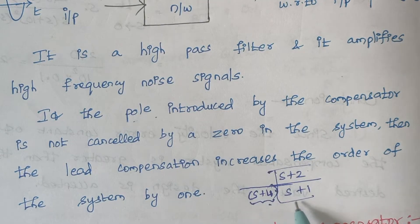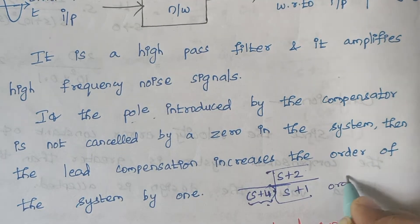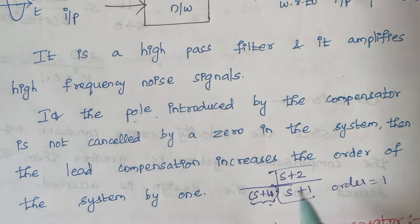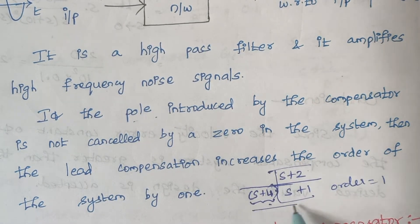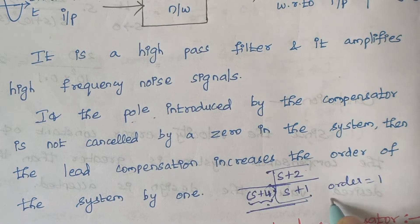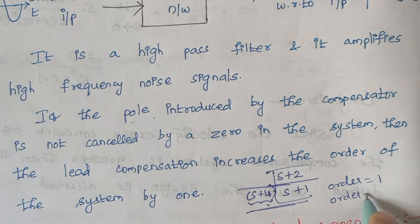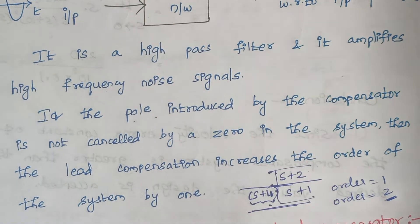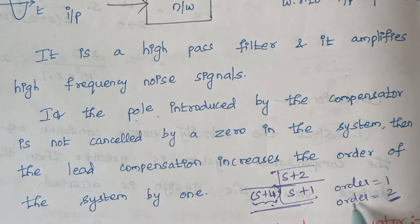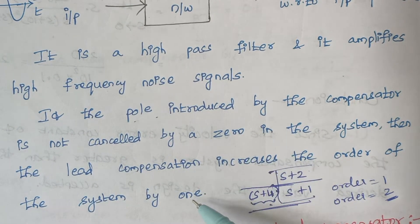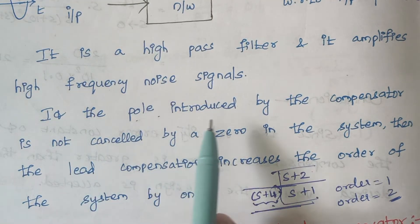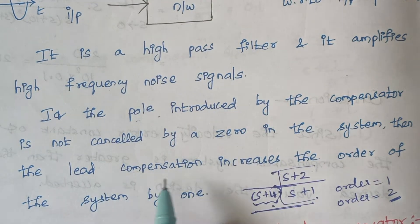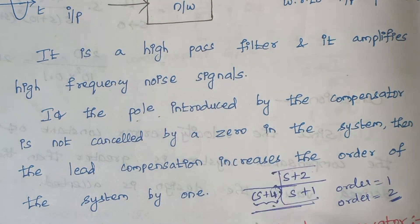Initially, what is the order of the system? The order is 1 because the maximum power of s is 1. After introducing the compensator, the transfer function gets modified — now the denominator has s times s, which is s squared. So the order of the system gets increased by 1. The pole introduced by the compensator is not cancelled by a zero, so lead compensation increases the order of the system by 1.